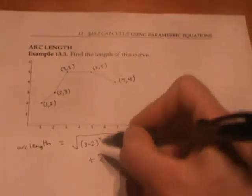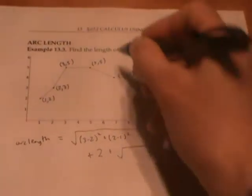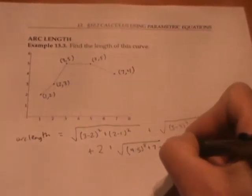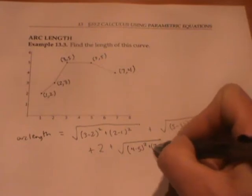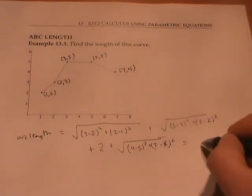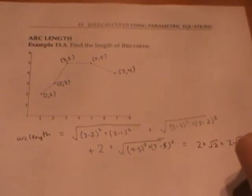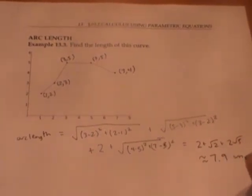The distance of that segment is 2, and finally the distance of that last segment. If we add these all up, we get 2 plus square root of 2 plus 2 square root of 5, which is about 7.9 units.